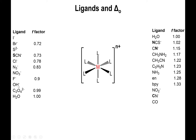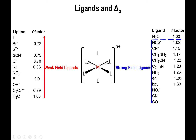Ligands with an f factor less than one relative to water are called weak field ligands, and those with a higher f factor than water are strong field ligands. Water itself is a weak field ligand. Weak field ligands decrease the delta octahedral energy separation; strong field ligands increase it. Mathematically, the delta octahedral value of your complex is simply the f factor of the ligand multiplied by the Jahn value from the hexa aqua reference table.